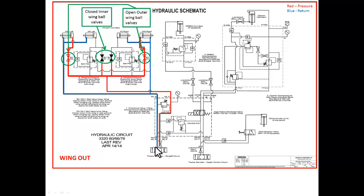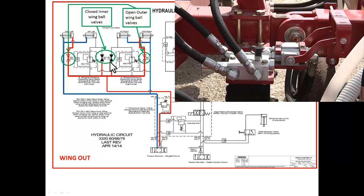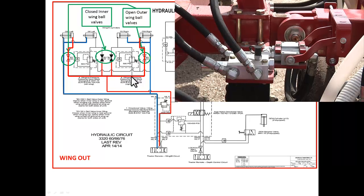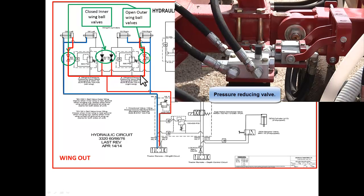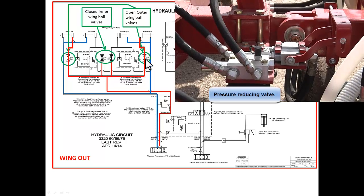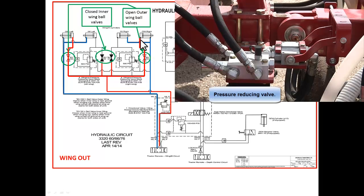Once the inner wings get to the ground, a mechanical ball valve will close and it will force the oil through a pressure reducing valve. At the same time it opens the outer wing ball valve and allows the outer wing to flip out.